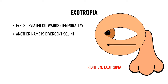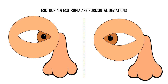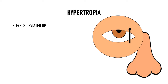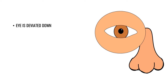Esotropia and exotropia are horizontal deviations. So let's discuss vertical deviations now. When the eye is deviated up, it is known as hypertropia. So as you can see, this patient's right eye is deviated upwards, so he has right eye hypertropia.